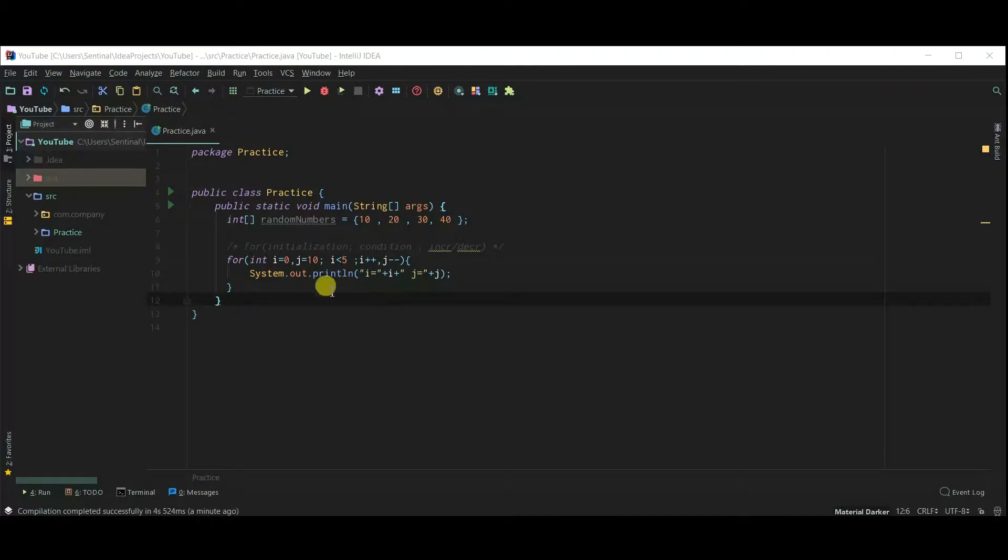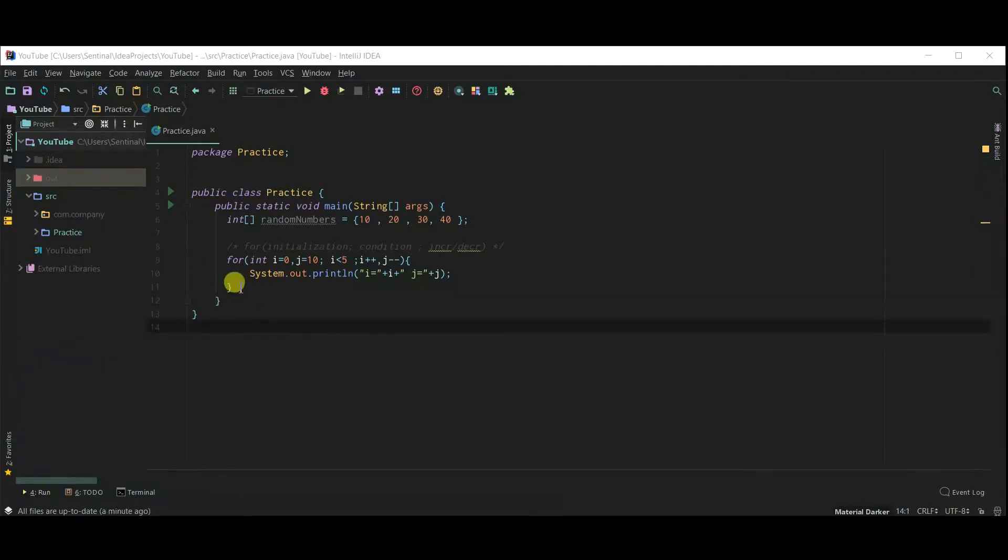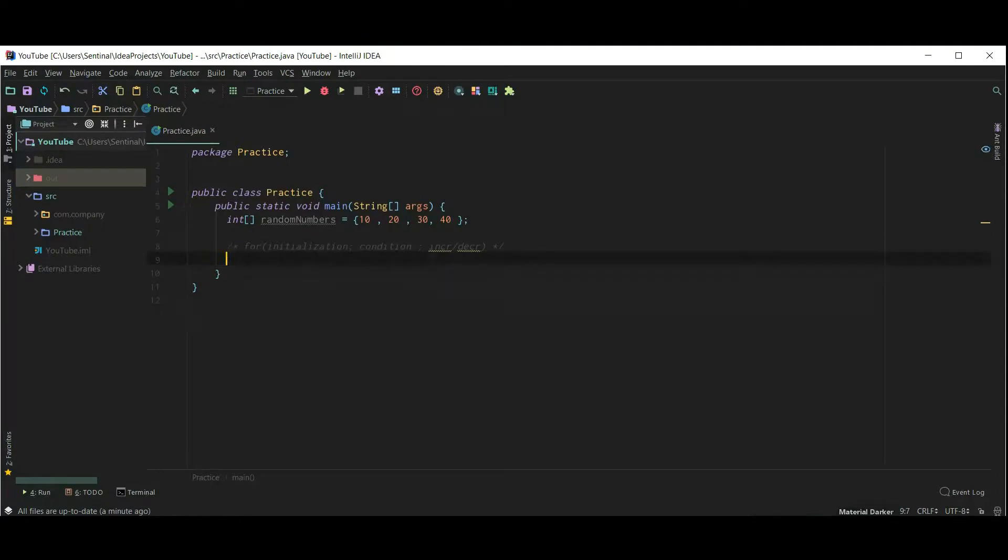We have seen this code in our video. Let's run, and our loop is working perfectly. Now it's time for for each loop.